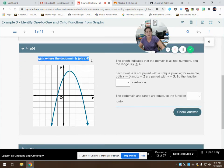This states up here that the codomain is y such that y is less than or equal to 4. So, it gives me a codomain. The graph indicates that the domain is all real numbers, and the range is all values of y less than or equal to 4. So, each x value is not paired with a unique y, because look at the value of, let's look at the x value of 2 and 0. They have the exact same y value.